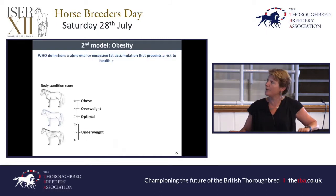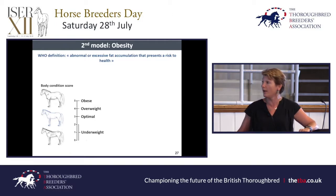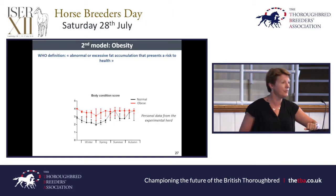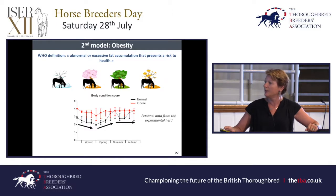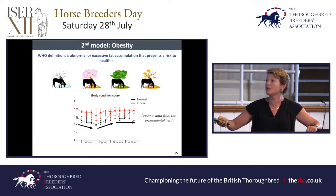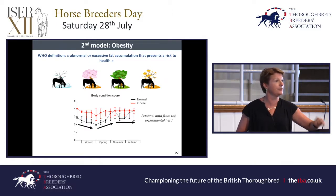The second model we used is obesity. Obesity is defined as abnormal or excessive fat accumulation that presents a risk for health — that's a body condition score of five on our scale. But one measurement doesn't mean the animal is obese. Normal animals lose body condition in winter, then it rises in spring and can go to four or even higher on lush pasture, then comes down again. Obese animals just stay high all the time. That's the key point — a series of BCS measurements will tell you whether animals are obese, not a single measurement.